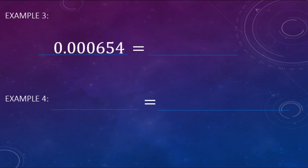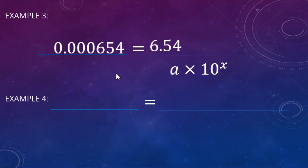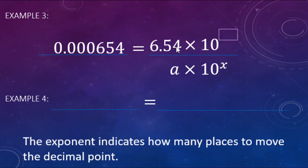Here's a really small number to write in scientific notation. The decimal place goes right after the six, so it's going to be 6.54, then times 10 to the — the exponent tells us how far that decimal place moved over. The decimal moved to behind the six — we count: one, two, three, four spots. Since this is a small number, the exponent is going to be negative. It moved four spots, so that's negative four for our exponent: 6.54 times 10 to the negative fourth.